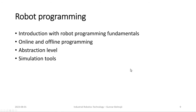Chapter six on robot programming is rewritten and for the most part adapted from the Swedish version. It starts with robot programming fundamentals, then covers online and offline programming, abstraction levels, and simulation tools — all in the context of industrial robotics specifically. There was a concern about including more specific examples, but going into specific robot languages was avoided. The thought is that a future edition may include more specific detail, possibly with a few examples, while still largely avoiding robot-language-specific content.